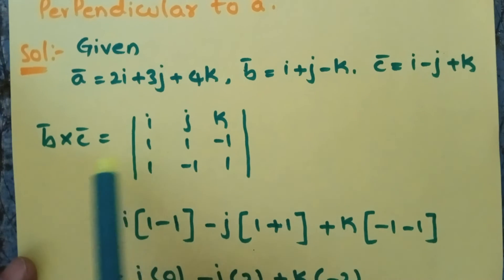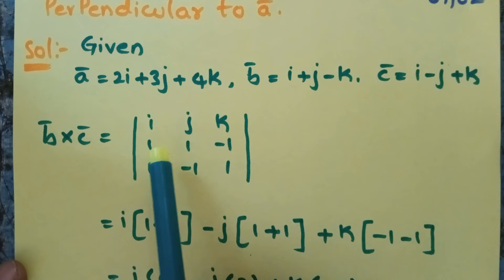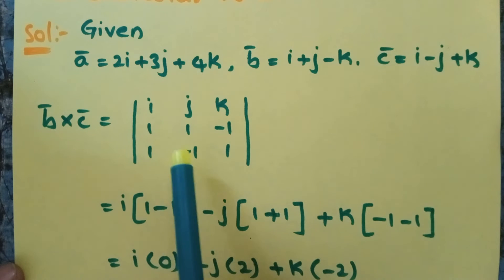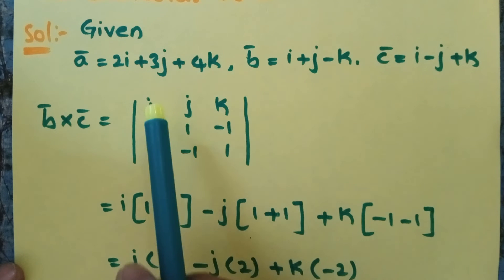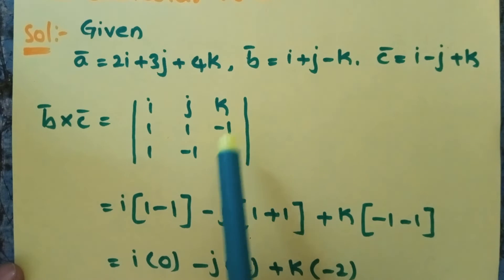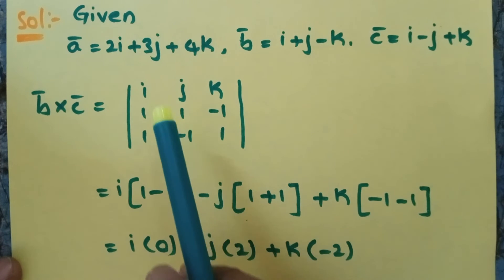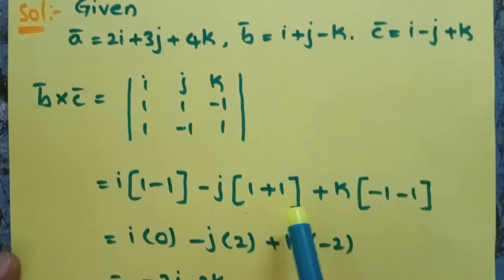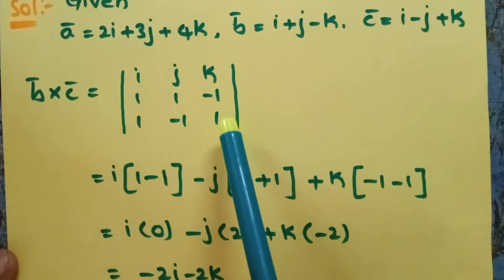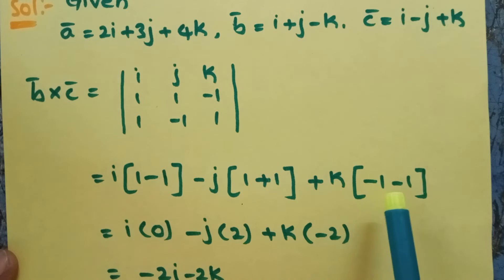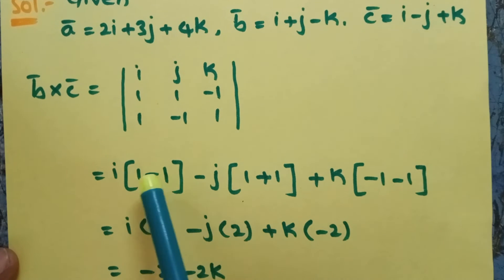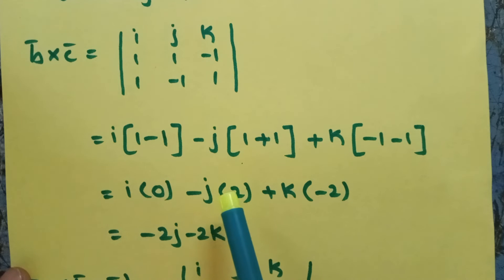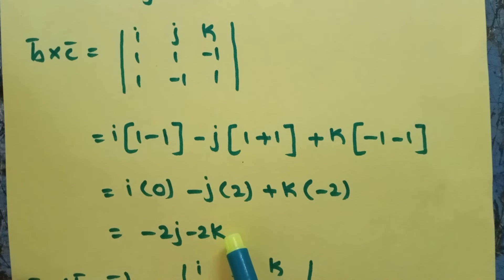First, we have to find the value of B cross C. Determinant of i, j, k; B components are 1, 1, minus 1; C components are 1, minus 1, 1. Expanding: i of (1 into 1 gives 1, minus minus 1 into minus 1 gives 1), so i of (1 minus 1) gives 0i. Minus j of (1 into 1 gives 1, minus minus 1 into 1 gives plus 1), so minus j of 2 gives minus 2j. Plus k of (1 into minus 1 gives minus 1, minus 1 into 1 gives 1), so k of minus 2 gives minus 2k. This is the value of B cross C: 0i minus 2j minus 2k.